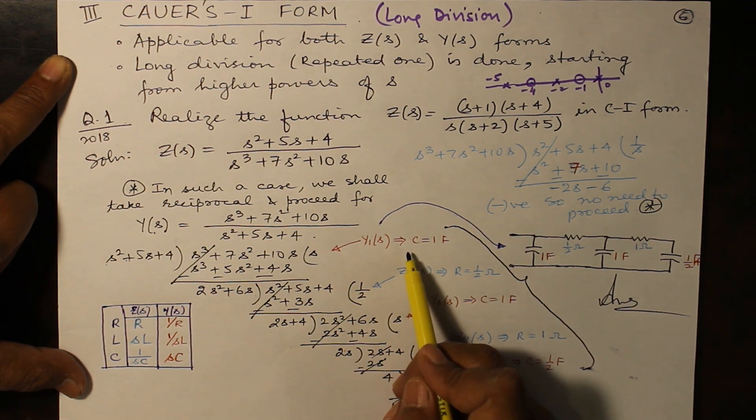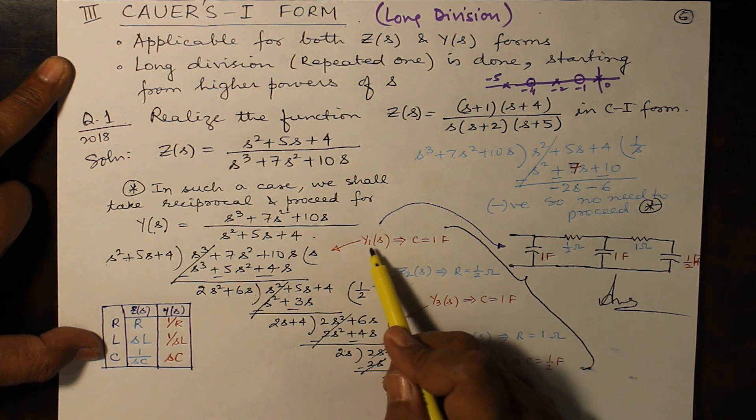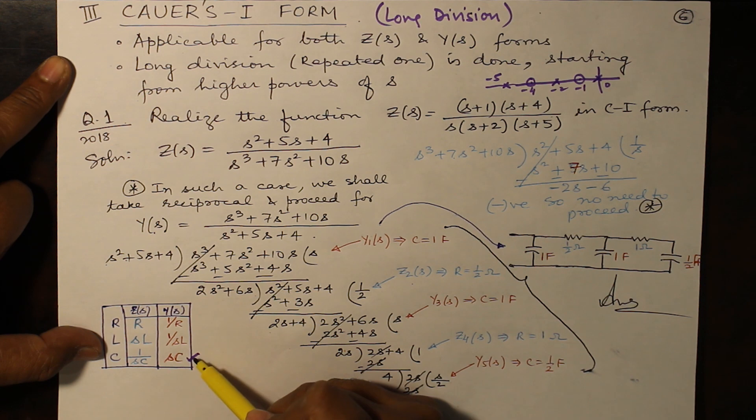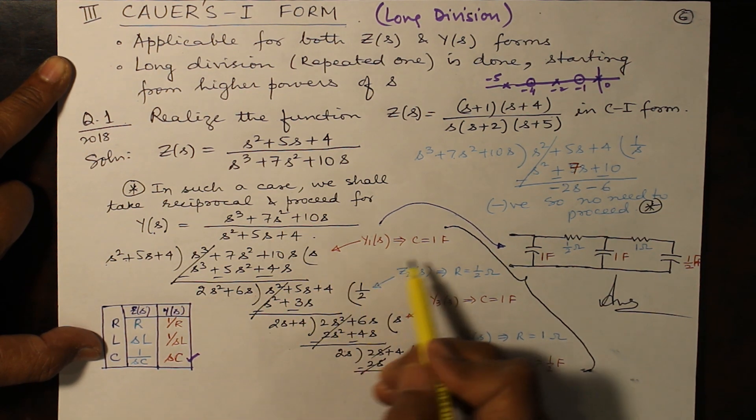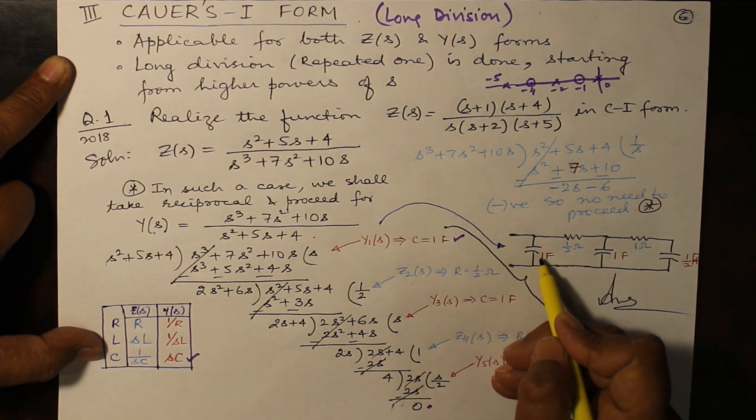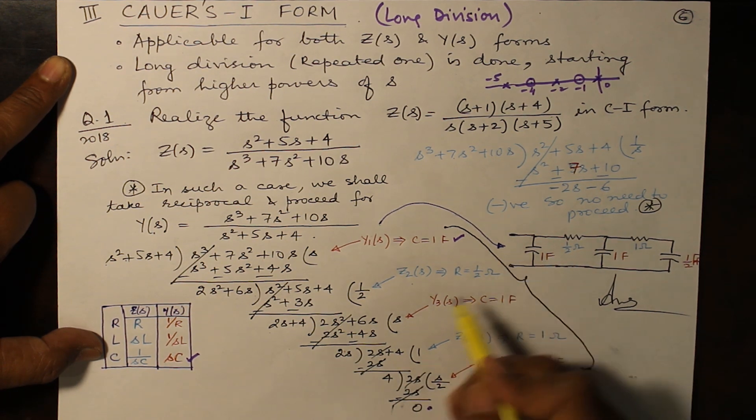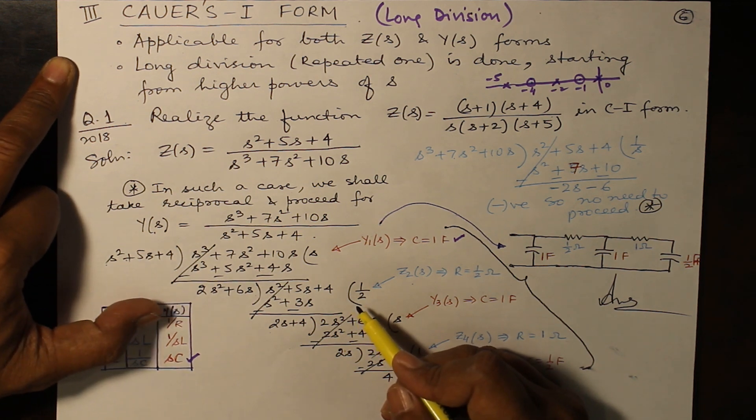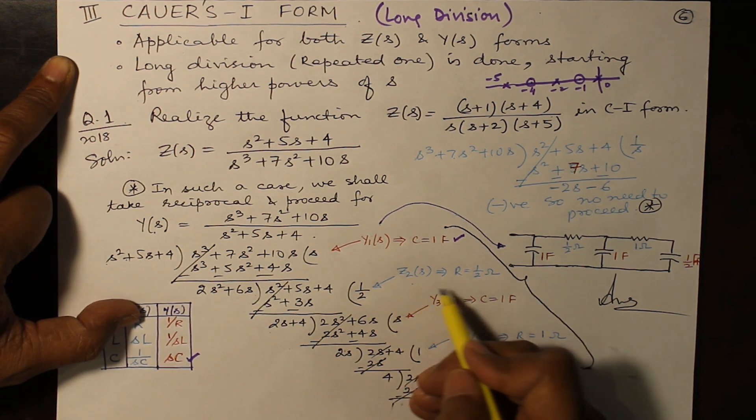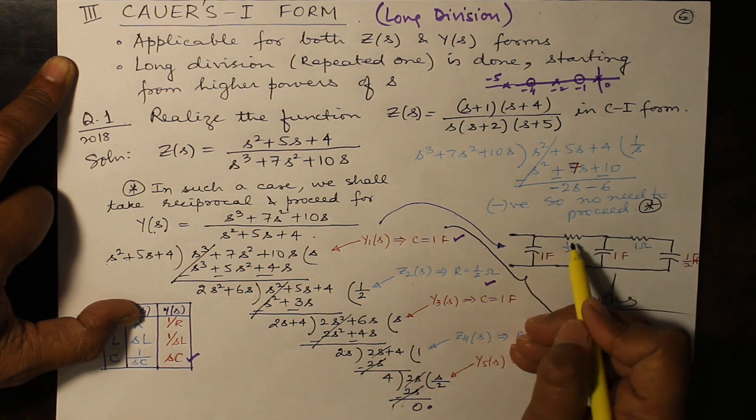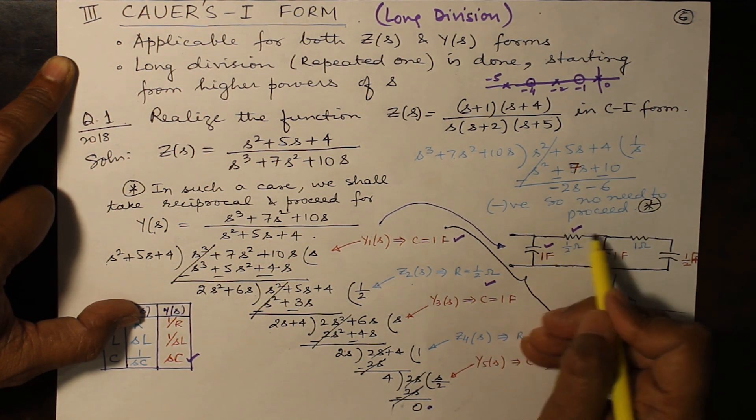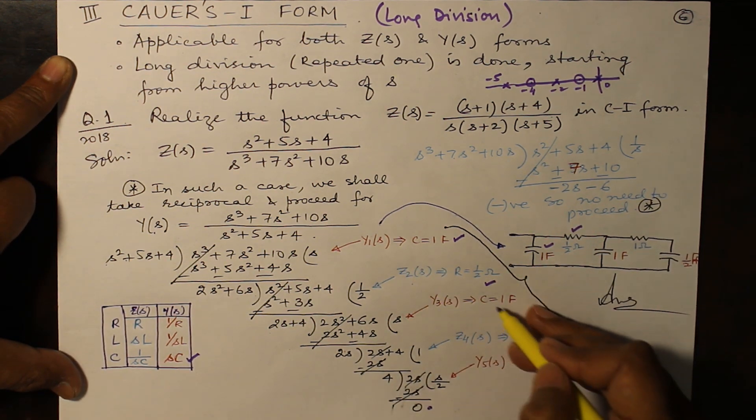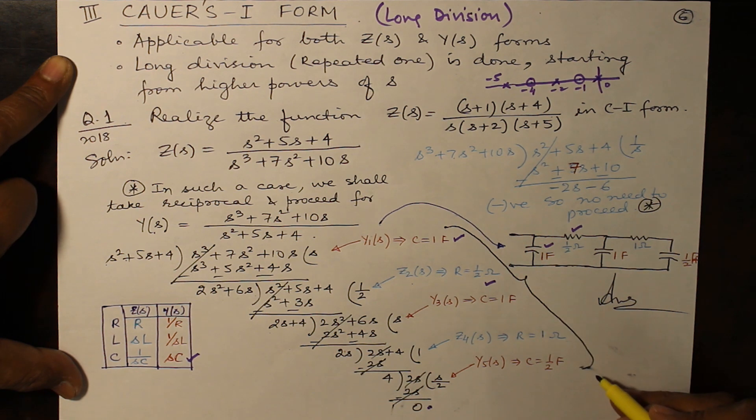Y1(s), look up table. See here, Y1(s) is equal to s, so it corresponds to sC. sC equals s, so C equals 1 farad in parallel. Next one is Z2(s) which will give half ohm here, so resistance becomes half ohm. These are the rungs of the ladder which are constituted by these elements. Similarly you can find out the value of C and R and you can obtain 1F, 1 ohm and half F. This is your answer.